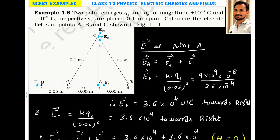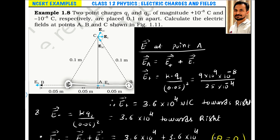Example 1.8. Two point charges Q1 and Q2 of magnitude 10⁻⁸ coulomb and −10⁻⁸ coulomb respectively are placed 0.1 meter apart. Here we have a plus and minus charge and the distance between them is 10 centimeters, that is 0.1 meter. Calculate the electric fields at point A, point B, and point C — at all three points we have to find the electric field.